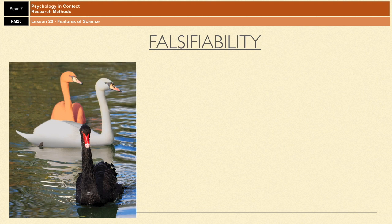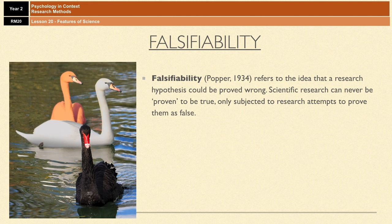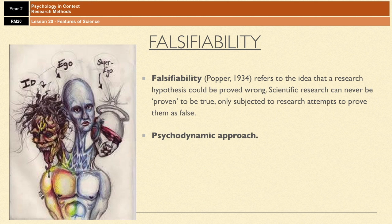Falsifiability refers to the idea that truly scientific research needs to have the ability to be proven wrong. Scientific research can never be proven to be true — you can only subject it to attempts to prove it false. For that reason, all investigations have a null hypothesis, which always suggests that any difference or relationship is due to chance. One theory that is considered unfalsifiable is Freud's psychodynamic approach.